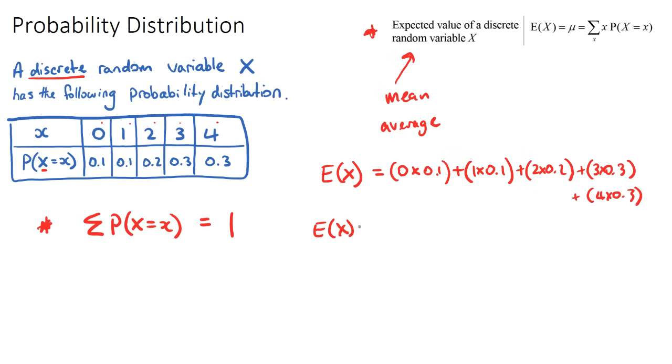And if we add all of this up, our expected value will be: this will be 0, plus 1 times that will be 0.1, plus 2 lots of 0.2 will be 0.4, and then 0.9, and then 1.2. So our expected value for our random variable, 1.2 plus 0.9 will be 2.1, and then 2.5, and 2.6.